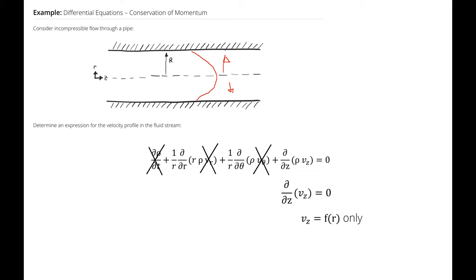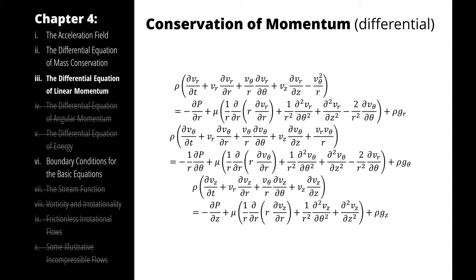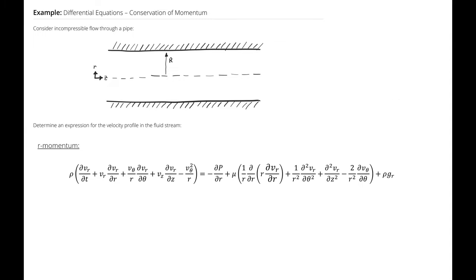Now I can look at my conservation of momentum. For that, I will consider the r direction first. In the r momentum equation, everything disappears except for the pressure gradient driving any flow. So I have no r component of velocity, therefore I have no r component of velocity changing with respect to anything else. And that leaves me with del p del r is zero. Therefore, pressure is only a function of z.